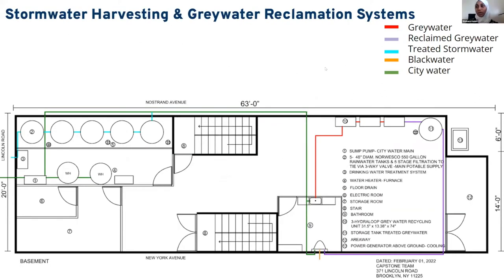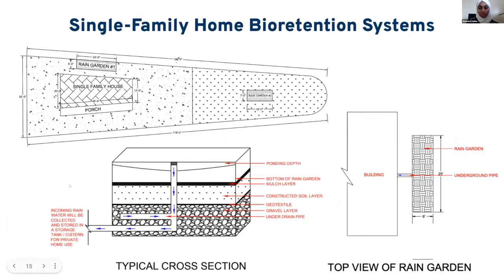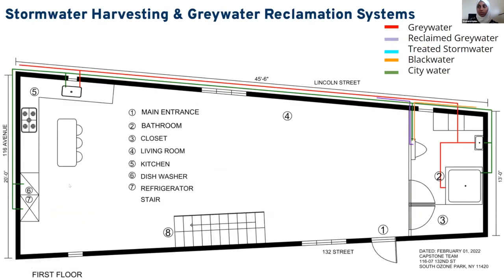On the first floor of the single-family home, everything in the bathroom and kitchen is attached to the city water line in green, which also doubles as the stormwater collection supply. Graywater is collected from the two sinks in the bathroom and kitchen, as well as the dishwasher and shower, and will be sent downstairs to be treated, highlighted in red.